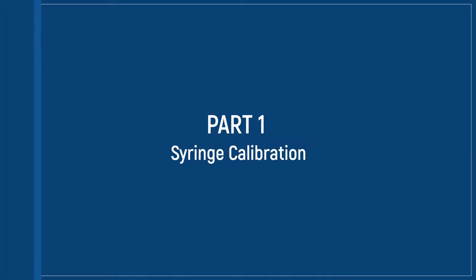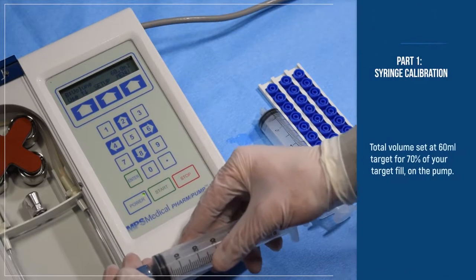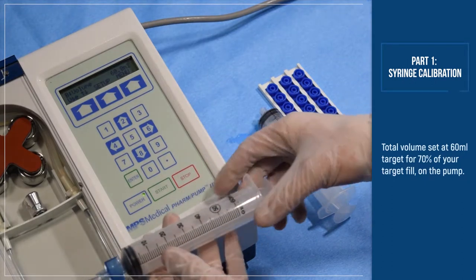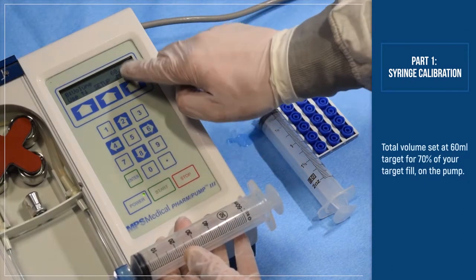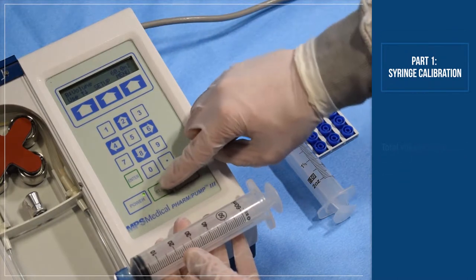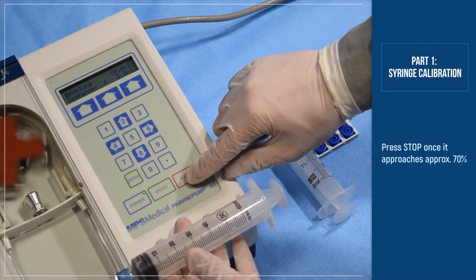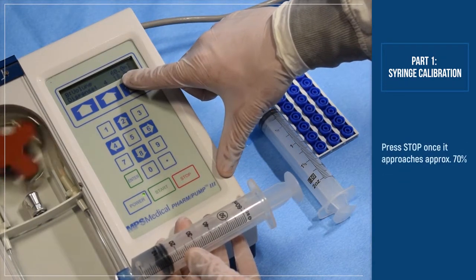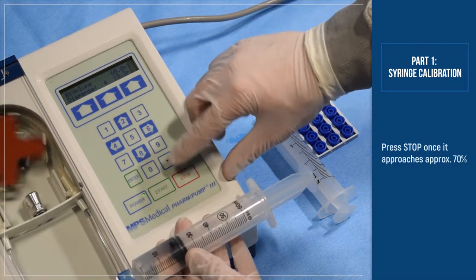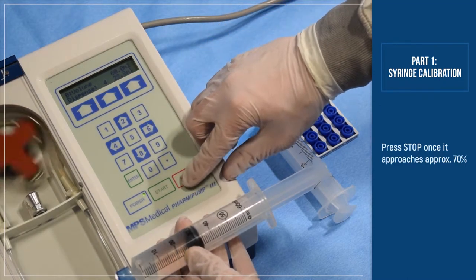Part 1, Syringe Calibration. Target for approximately 70% of your target fill. In this example, we use 60 mL as our target total fill. We will stop at approximately 70% using the barrel of the syringe as our measurement.